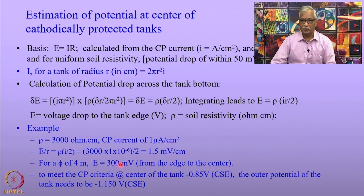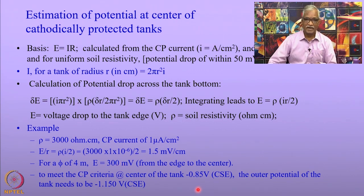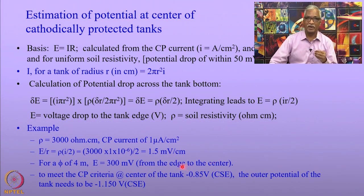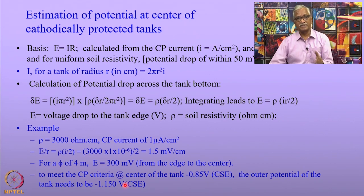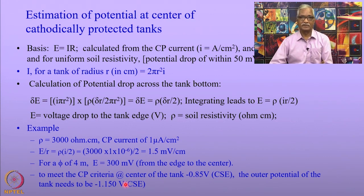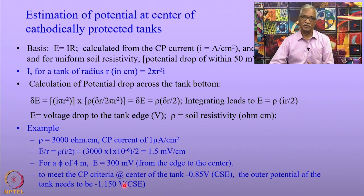Let us look at the criteria for cathodic protection. We know the minimum potential required is minus 0.85 volt with respect to the copper-copper sulfate electrode. Then, if you have to have a potential of minus 0.85 V at the center, the edge of the tank should measure a potential of minus 1.1 volt with respect to the saturated copper-copper sulfate electrode. So it is possible to calculate the potential at the center if we know the soil resistivity and the current density required for cathodic protection.